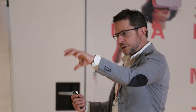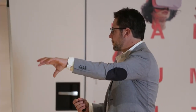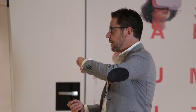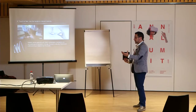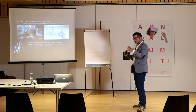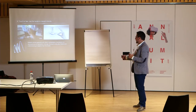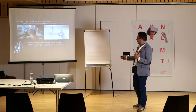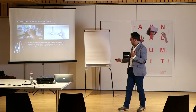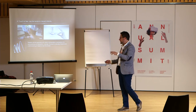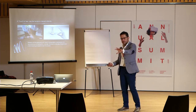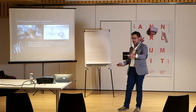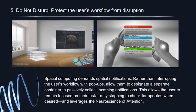Principle number four: Touch to See — use the hands to interact directly. We advocate replacing remote gestures with direct manipulation right where the object is, leveraging the neuroscience of interaction. The brain has complex systems that naturally heighten understanding of objects near the hands.